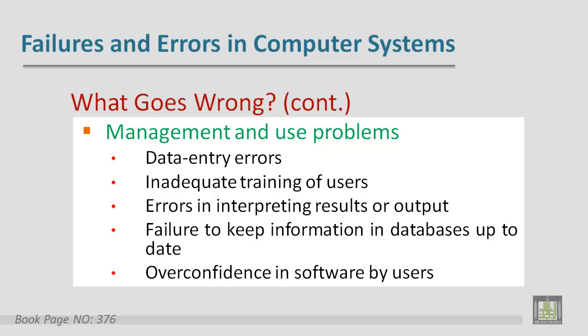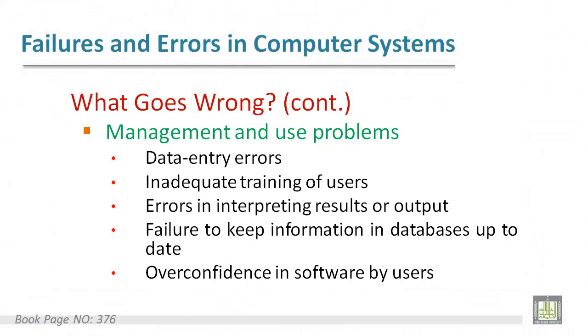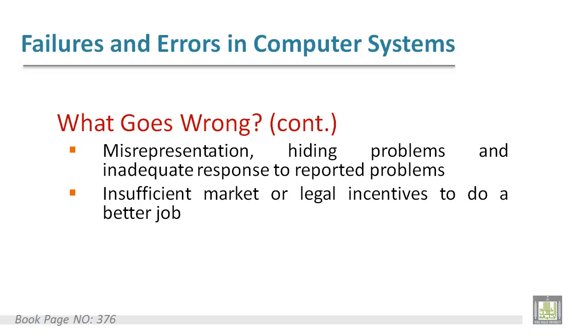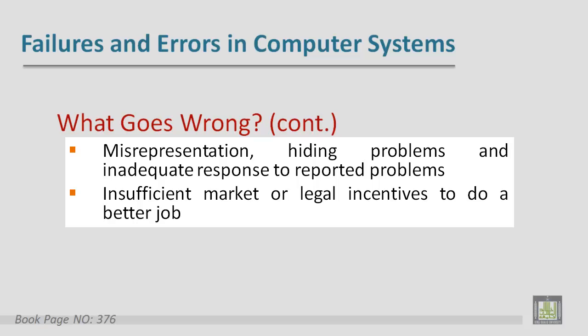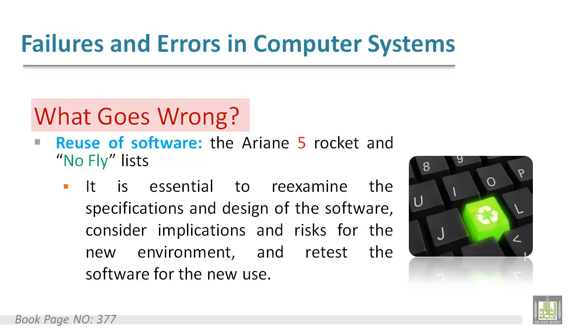Regarding management and use problems, these include: data entry errors, lack of training of users, errors in interpreting results or output, failure to keep databases up to date, overconfidence in software by users, misrepresentation, hiding problems, inadequate response to reported problems, and insufficient market or legal incentives to do better — all important factors in causing failures and errors in computer systems.